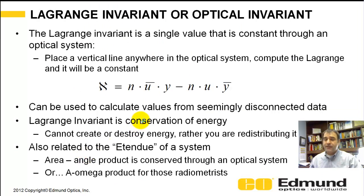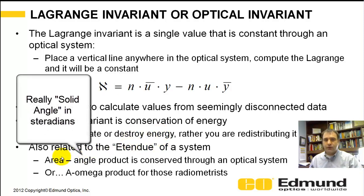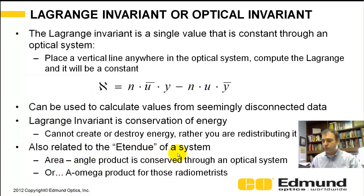Also related to ray tracing and first order parameters is the Lagrange invariant. If you place a plane anywhere in an optical system and compute the quantity — index times a function of chief and marginal ray angle and height — you get a parameter that doesn't change through the optical system. This comes from conservation of energy. It's also related to the étendue, or for radiometry, the area-angle product (A-omega product), which must be conserved. Hopefully that's a little intro to podcasts coming — please stay tuned, and thank you.